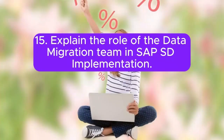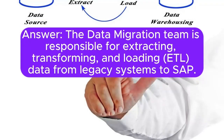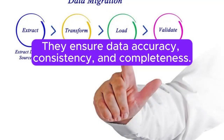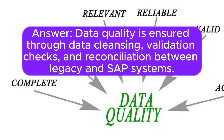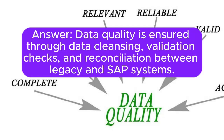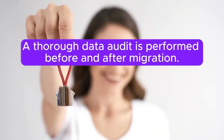Question 15: Explain the role of the data migration team in SAP SD implementation. Answer: The data migration team is responsible for extracting, transforming, and loading (ETL) data from legacy systems to SAP. They ensure data accuracy, consistency, and completeness. Question 16: How do you ensure data quality during master data migration in SAP SD? Answer: Data quality is ensured through data cleansing, validation checks, and reconciliation between legacy and SAP systems. A thorough data audit is performed before and after migration.